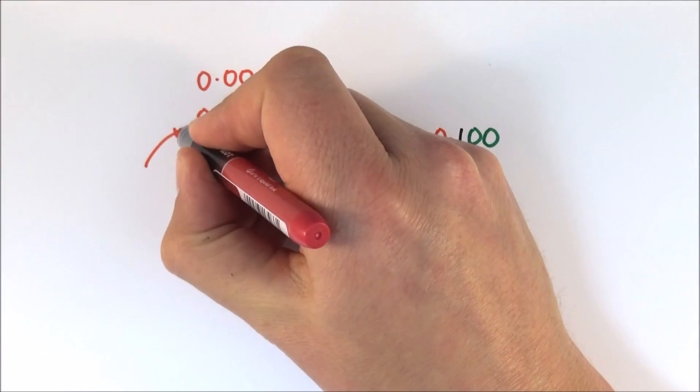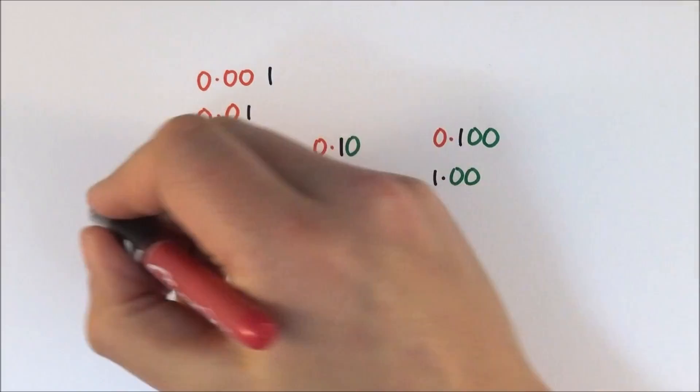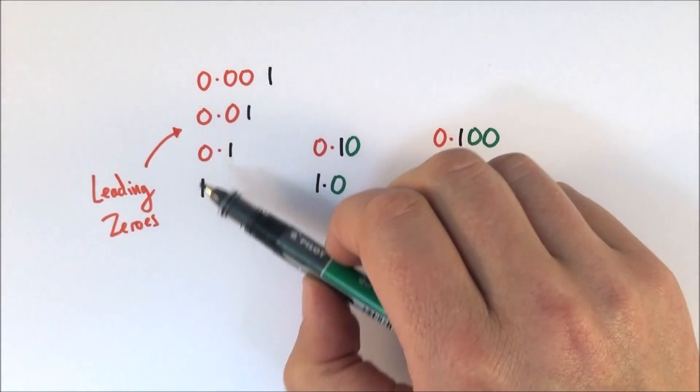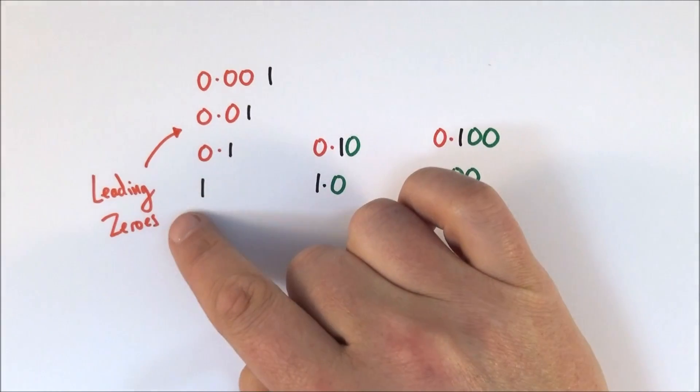What we have over here in red are what we call the leading zeros. So these numbers here are before the number that we're talking about and they don't really add anything to the significance.